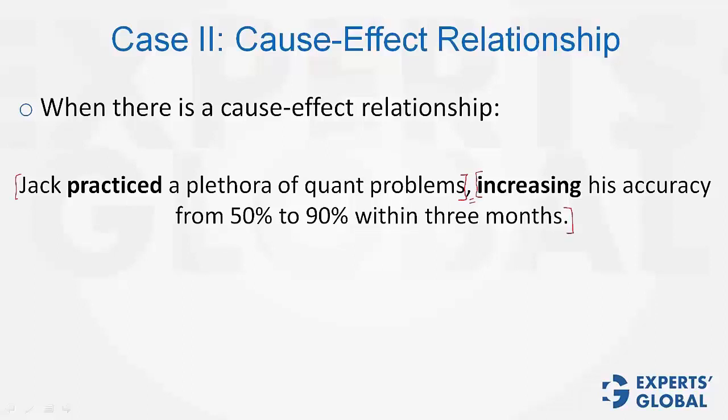and then the other part is the effect. Cause-comma-effect relationship. Then, in one part, you will see the ed form, and the other part will use ing form, and this is the correct construction. In fact, in such cases, the two verbs should not have the same form. The sentence is perfectly alright.